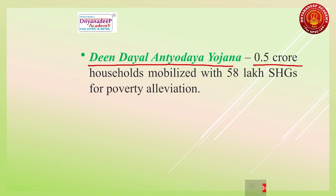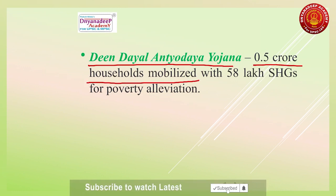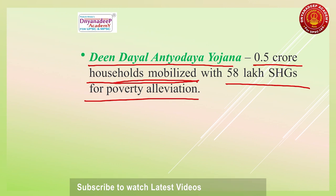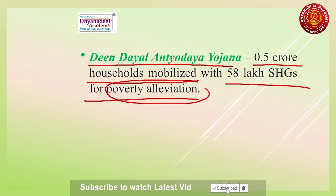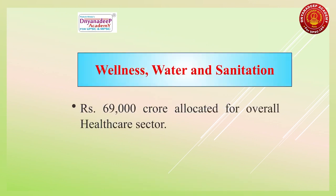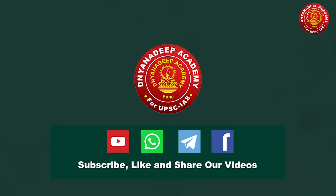The budget also focuses on 0.5 crore households mobilized with 58 lakh self-help groups for poverty alleviation. The second component of Aspirational India — wellness, water and sanitation — will be covered next. Thank you very much, please share with your friends.